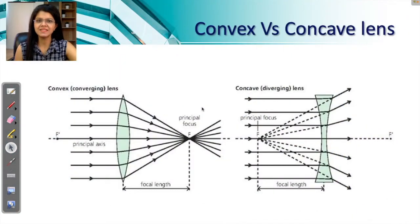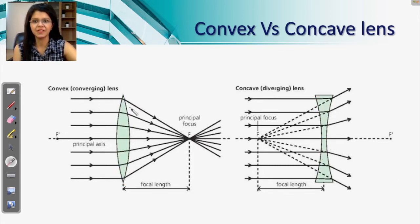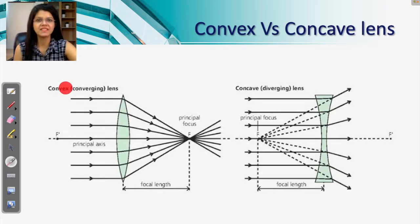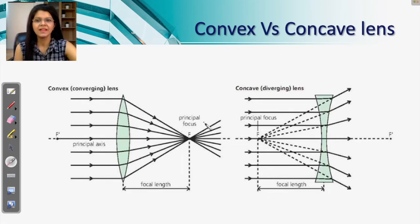Looking at the two pictures, you can see two different kinds of lenses. A lens which is thinner at the boundary but thicker in the middle is called a converging lens or convex lens. The lenses which are thicker at the boundary and thinner in the middle are called diverging lenses, or concave lenses. In this video we are going to focus on converging lenses.